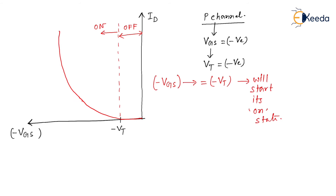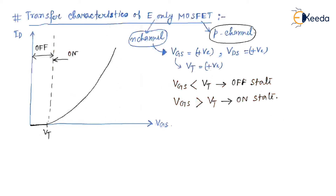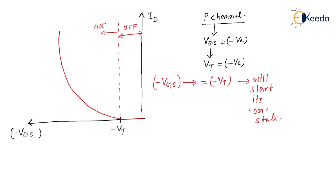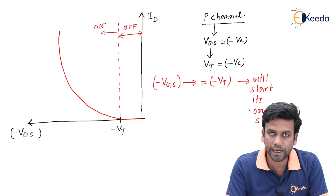The transfer characteristics is plotted in the first quadrant for the N-channel E-only MOSFET, or in the second quadrant for the P-channel MOSFET because the Vgs value required is negative. So for P-channel and N-channel the transfer characteristic plot will be the same — only the quadrant will change. This is all about the transfer characteristics plot for E-only MOSFET. Thank you.